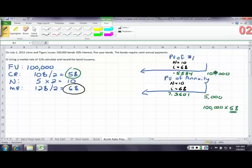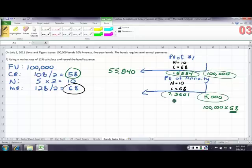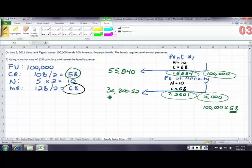If I take 100,000 times .5584, I get 55,840. That's the present value of the right to receive 100,000 in 10 payment periods. Then if I take the 5,000 times the present value of an annuity, I get 36,852. I add the two of those together, and I get 92,640.50. That's how much we sold the bond for.